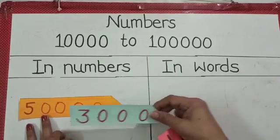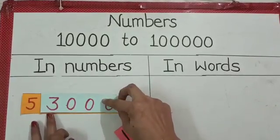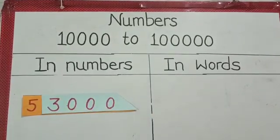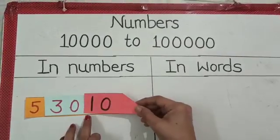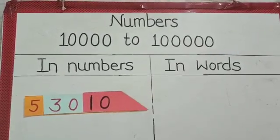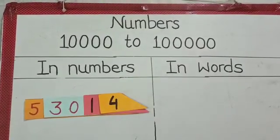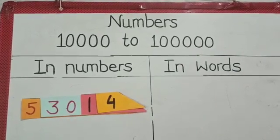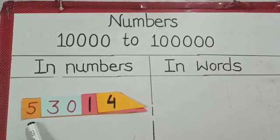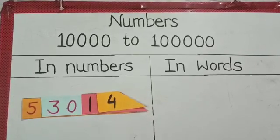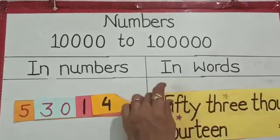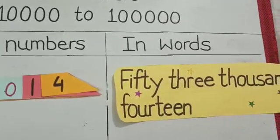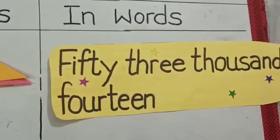50,000 and 3,000. Now students, we have no digit at place of hundreds. And it will be read as 53,014. And in words, it will be written as fifty-three thousand fourteen.